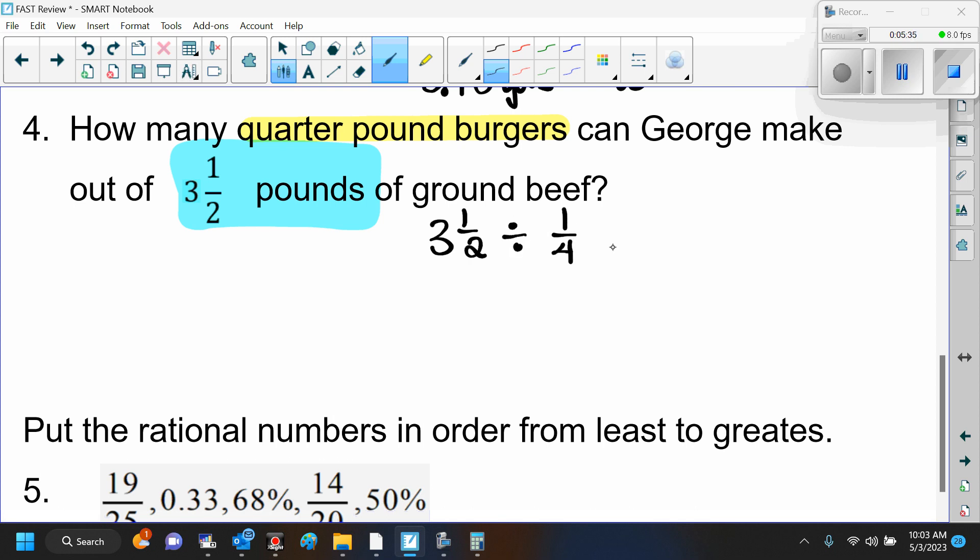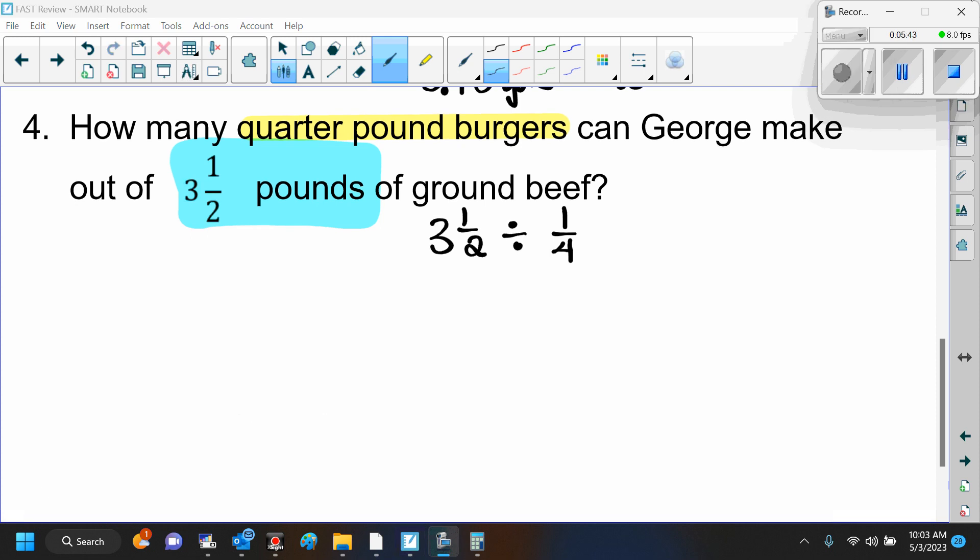Would you guys mind if I don't change these to decimals so we can practice the fractions? What do I do with these fractions so that I can divide? I can change this 3 and a half to an improper fraction. Do you guys remember how to do that? So 2 times 3 is 6, plus 1 is 7. So this is going to be 7 halves, and we're going to divide by 1 fourth.